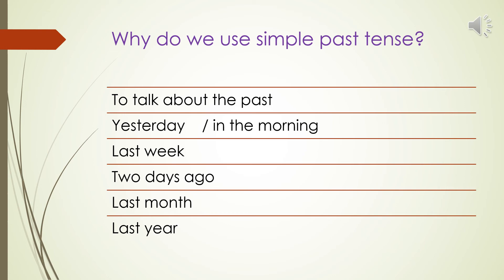Why do we use the past tense? Just like in Arabic and all languages in the world, we use the simple past tense to talk about the past - to talk about something that happened in the past. A sentence about the past may include time words like: yesterday, in the morning, last week, two days ago, last month, last year.